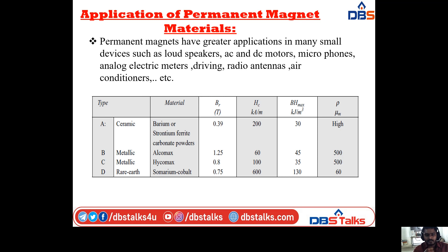For the ceramic type A material, we have barium or strontium ferrite carbonate powder. For type B, that is metallic, the material is Alcomax. For type C, that is also metallic, we have Icomax.